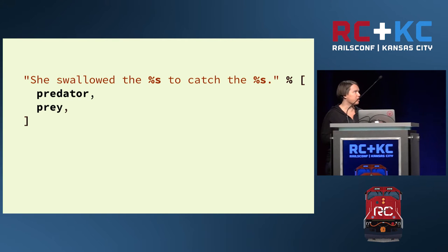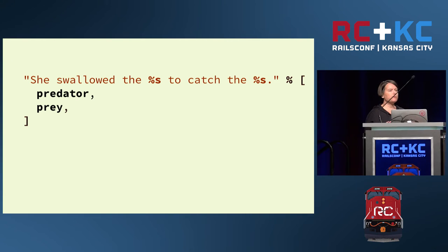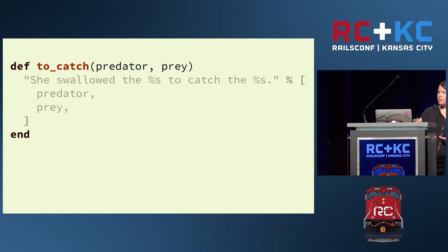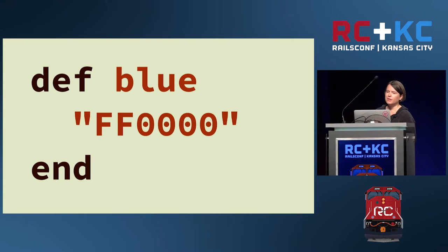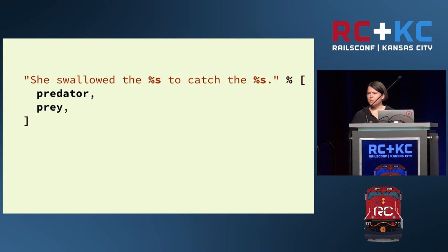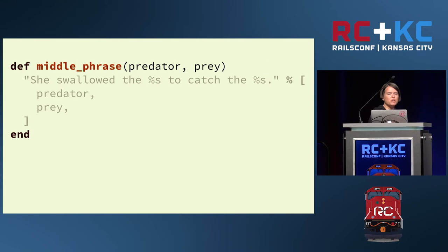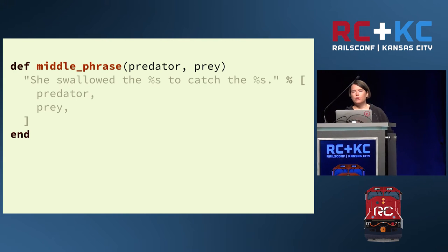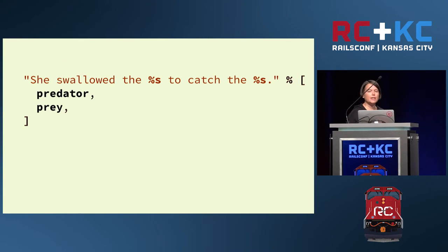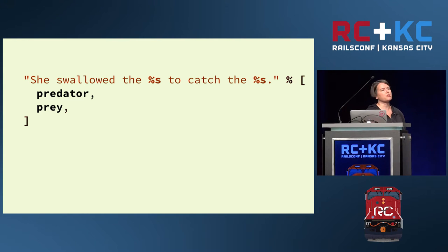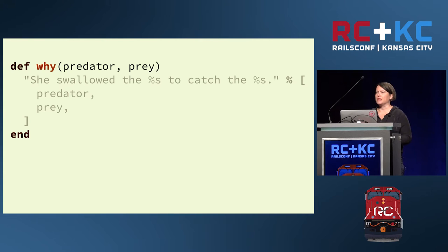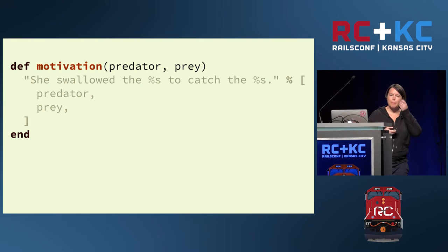There are three very common strategies for naming things. The first is to name it using some fragment of the implementation — like 'swallow' or 'to catch' — something concrete that quickly gets out of date. The second is to name it structurally — 'recurring line' or 'middle phrase' — which is technically accurate and totally unhelpful. The problem domain here isn't about phrases; it's about a little old lady who inexplicably swallows a fly. This part of the song is trying to explain her reasoning — her motivation — for swallowing larger and larger creatures. So we need to call 'motivation' some number of times, each time with different data.